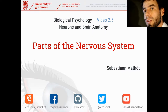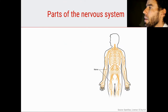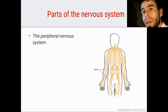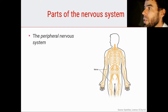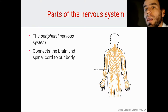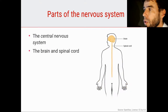Hi and welcome back to this video course Biological Psychology, video 2.5, in which we're going to take a look at the different parts of the nervous system. The main division we can make is between the peripheral nervous system, which connects the brain and spinal cord to our body — as depicted in this picture — and the central nervous system, which consists of our brain and spinal cord.